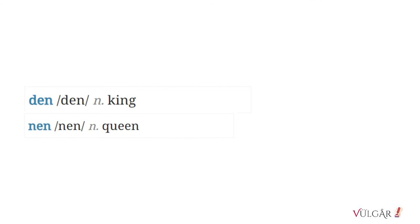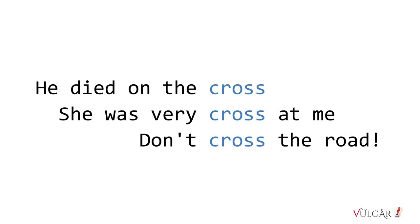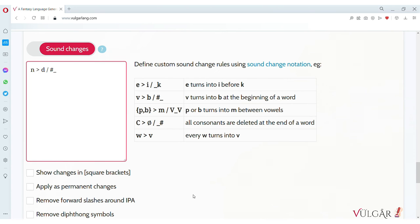One minor issue with sound changes is that it's possible to change a word to the same pronunciation as another word. At the initial word generation phase, all words in the dictionary are made to be uniquely pronounced, but sound changes are applied after the deduplication stage. Homophones are quite a normal phenomenon in natural languages, so it's not something you necessarily have to stress over.